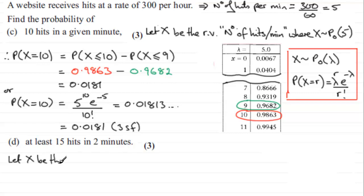but let X be the random variable, RV again for short, and we'll have here number of hits per 2 minutes.